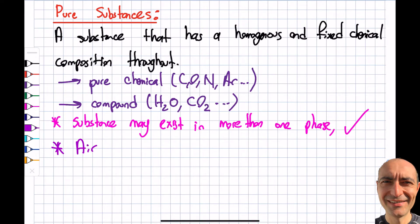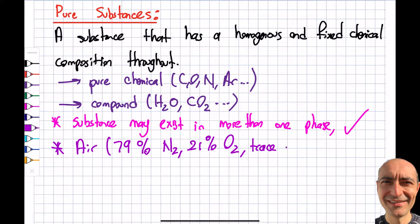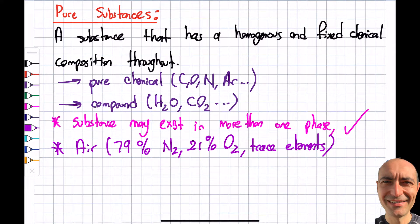A notable exception we study is air. Technically, air is not a pure substance — it contains approximately 79% nitrogen, 21% oxygen, and trace elements. However, we will treat it as one under certain circumstances. For example, if you cool humid air below its dew point temperature, the water vapor condenses, giving you distinctly different properties — water and air — so that treatment no longer works.